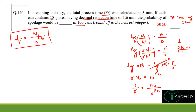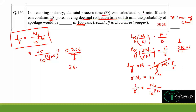Rearranging gives 1/r = N₀ / 10^(F/D). Substituting values: N₀ = 20 spores, F = 3 minutes, D = 1.6 minutes. So 1/r = 20 / 10^(3/1.6). Solving gives 1/r = 0.266. For 100 cans, multiplying by 100 gives 26.66.